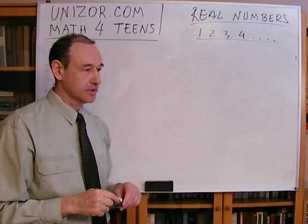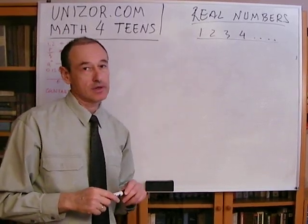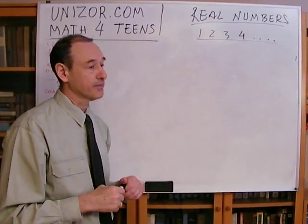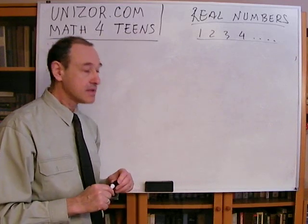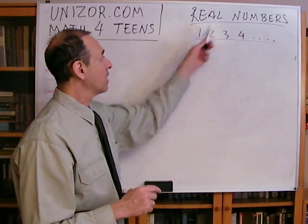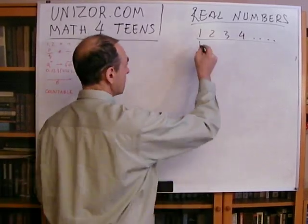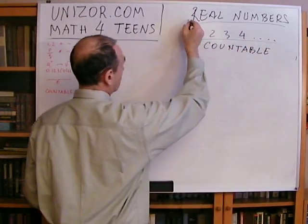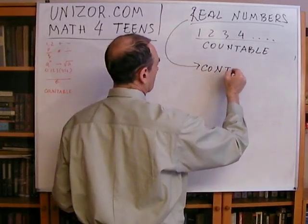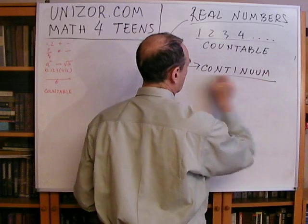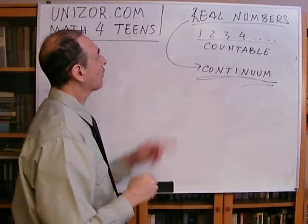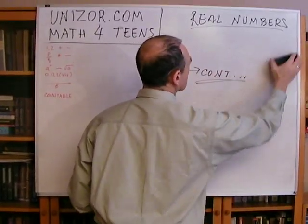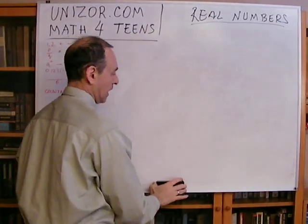And here's the interesting point: if we add irrational numbers — numbers like the square root of two and many others — this is not of the same type. This is a much more powerful set. Rational numbers are countable, but the set of real numbers has what we call the continuum. This is the word we use to represent the power of this set. We cannot count it — it's much more numerous than the number of natural numbers.